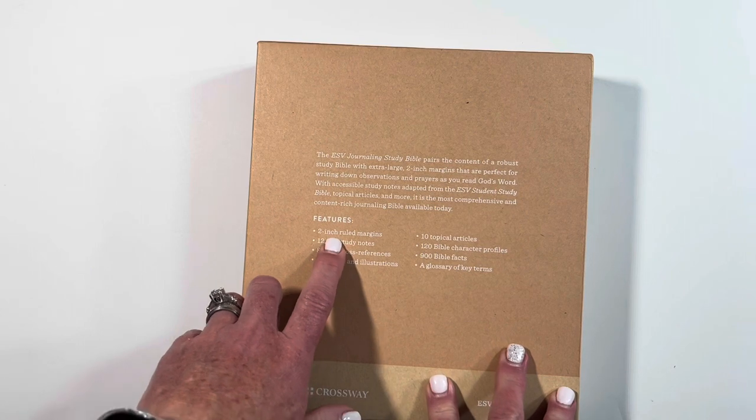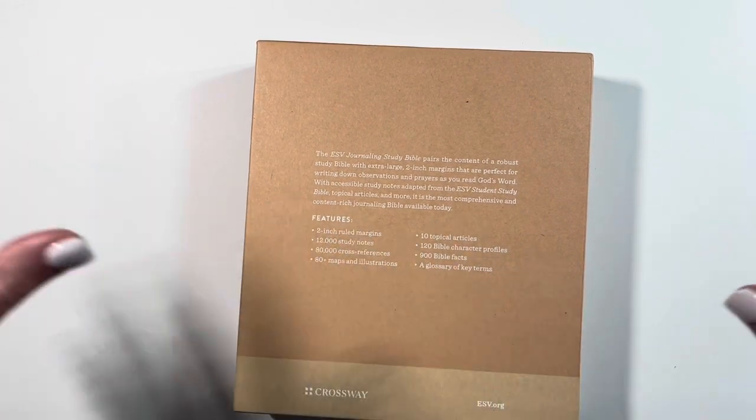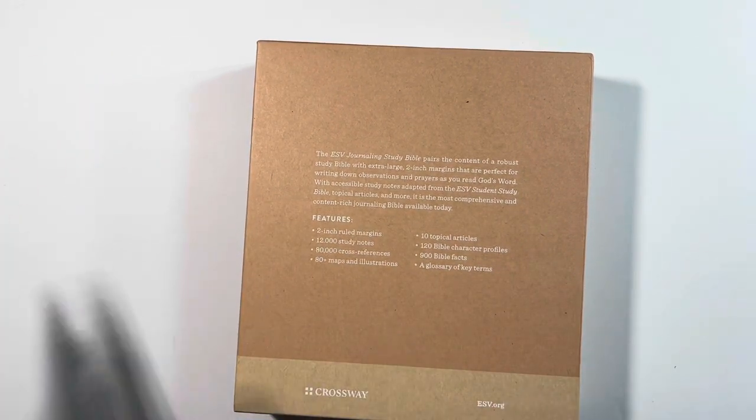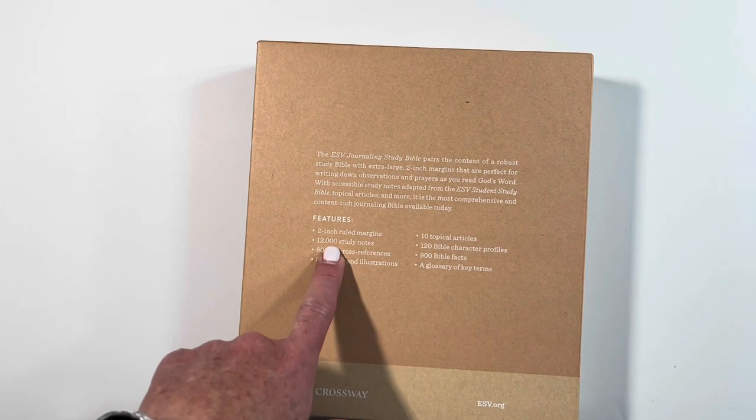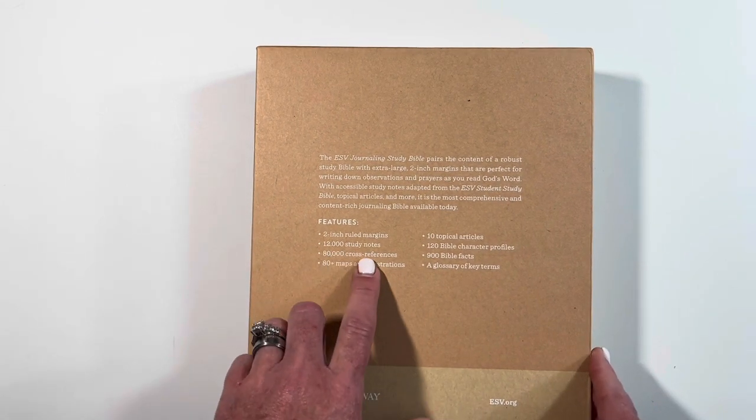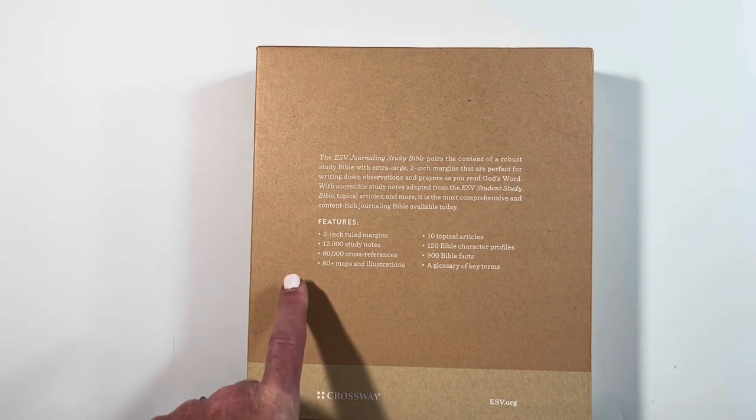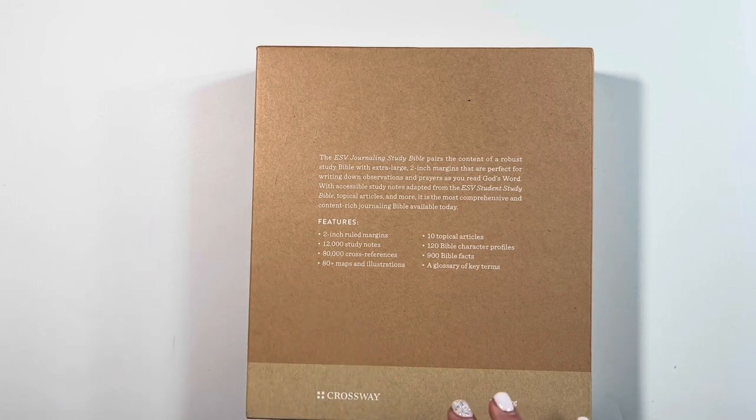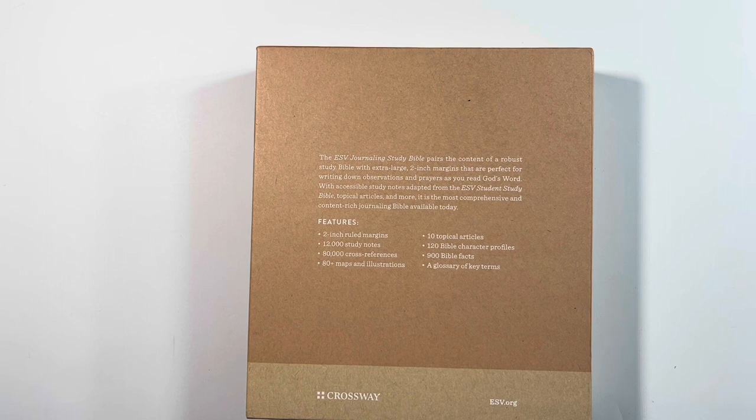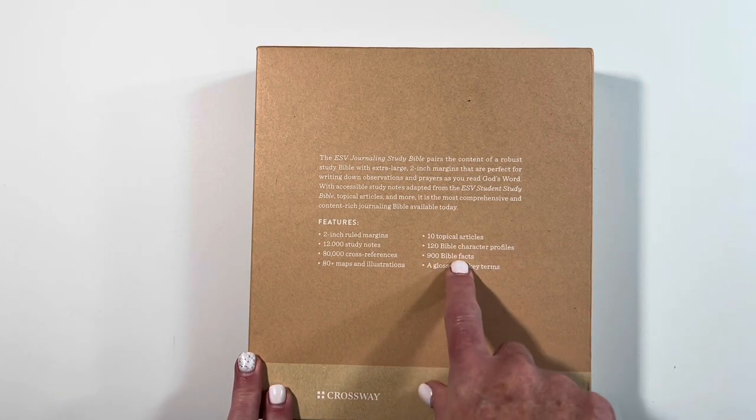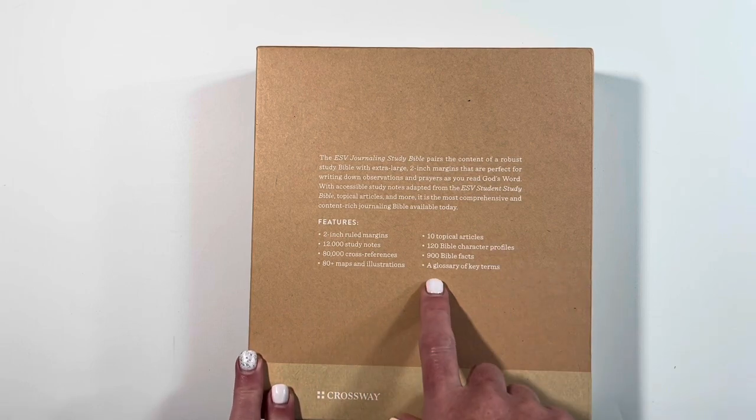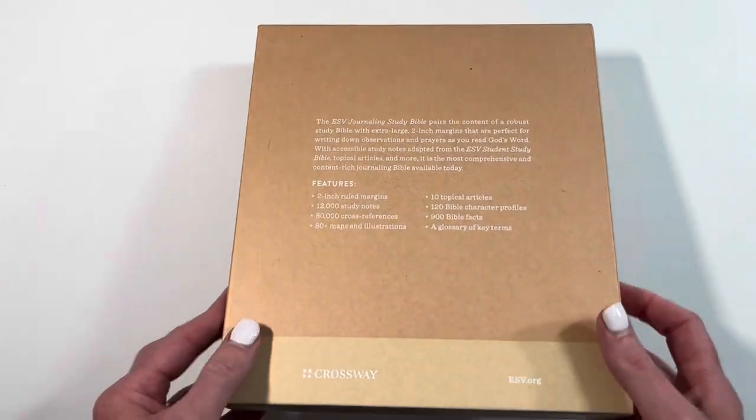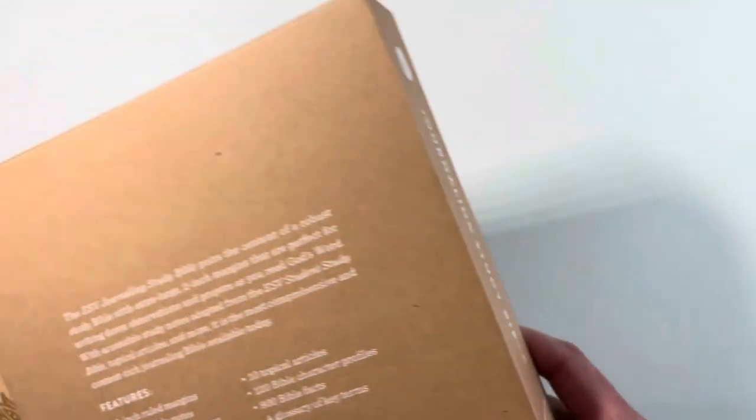So let's talk about the features. We have a two-inch ruled margin that's for journaling, taking notes, writing prayers. Twelve thousand study notes, eighty thousand cross-references, eighty plus maps and illustrations, ten topical articles, a hundred and twenty Bible character profiles, nine hundred Bible facts which is awesome, and a glossary of key terms.